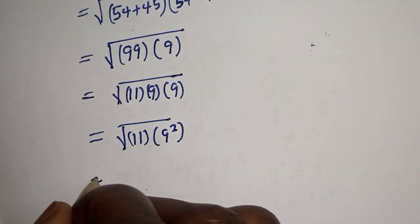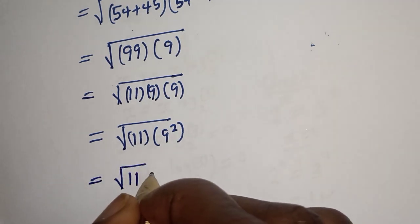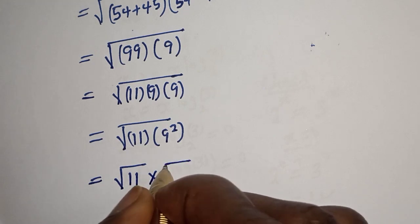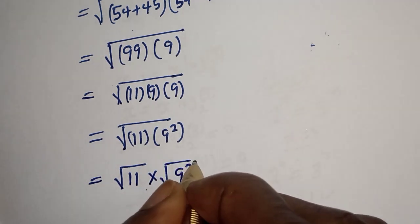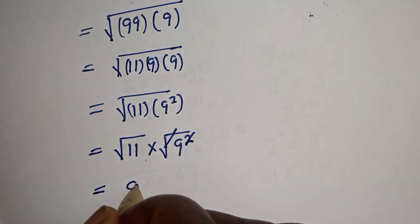Equal to square root of 11 multiplied by 9 squared. And this is equal to square root of 11 multiplied by square root of 9 squared. We cancel this. This is equal to 9 square root of 11.